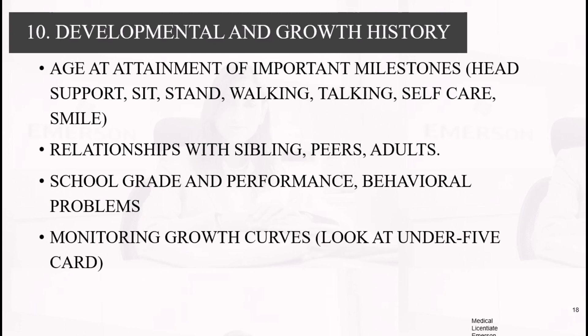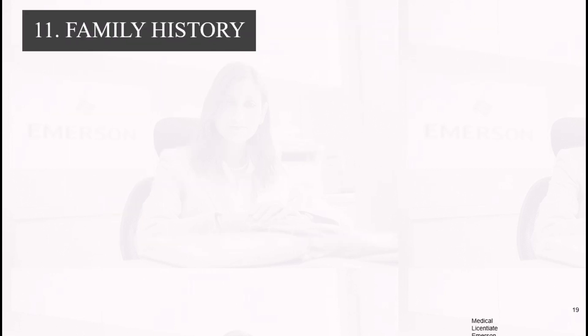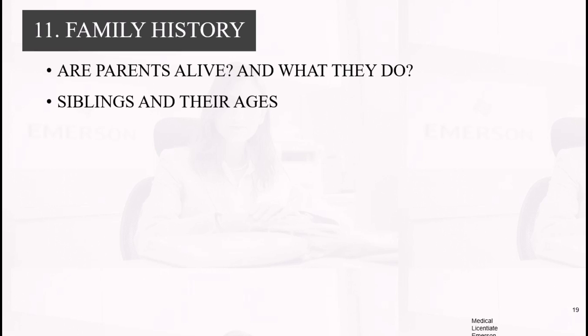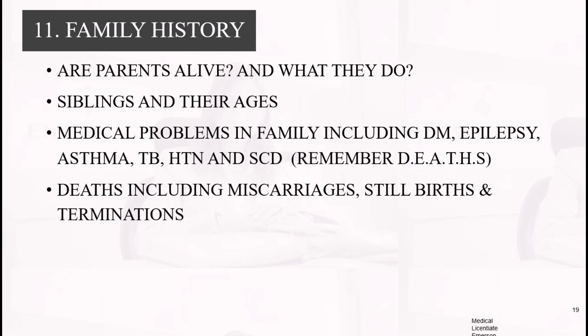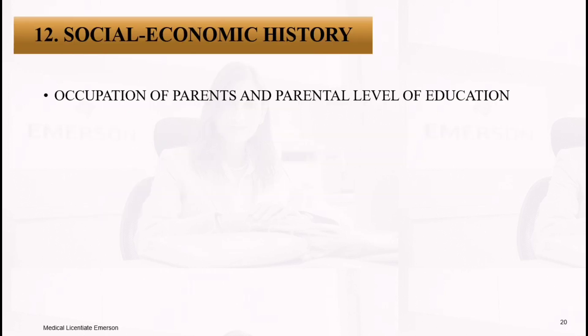For family history, ask about the parents — are they alive and what do they do? Ask about siblings and their ages. Ask about problems in the family using the DEATH mnemonic: diabetes mellitus, epilepsy, asthma, TB, hypertension, sickle cell disease, and the like. Ask about deaths in the family including miscarriages, stillbirths, and terminations.